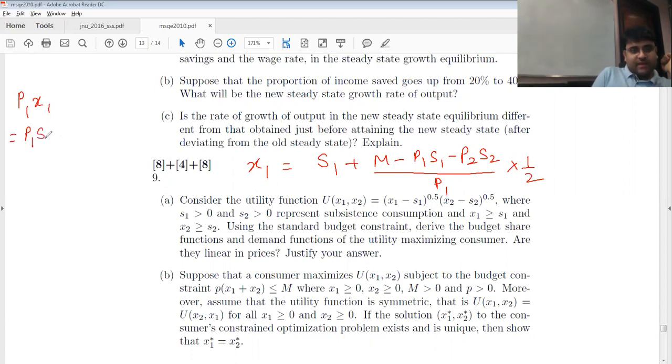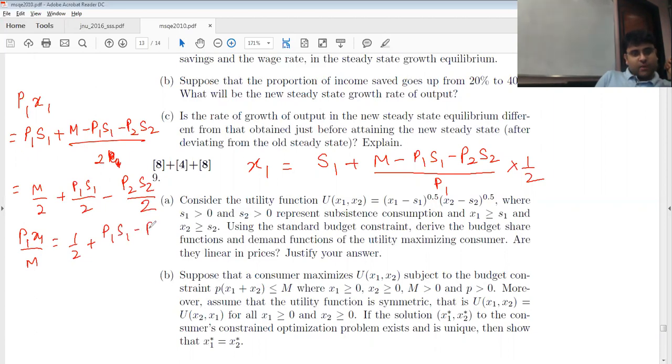p1 s1 plus m minus p1 s1 minus p2 s2 by 2. So this gives us m by 2 plus p1 s1 by 2 minus p2 s2 by 2. Can I write it? So the budget share, which is p1 x1 by m, will be equal to half plus p1 s1 minus p2 s2 by 2m.